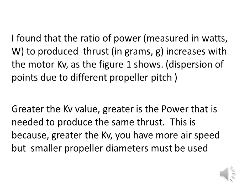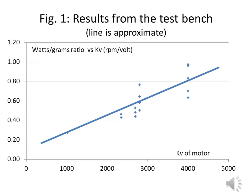Greater the kV, you have more airspeed but smaller propeller diameters must be used. In this figure, the power-to-thrust ratio is the vertical axis and the kV of motor is on the horizontal axis. The power-to-thrust ratio increases when the kV of motor increases. The graph is a simplification of the total relationship found.